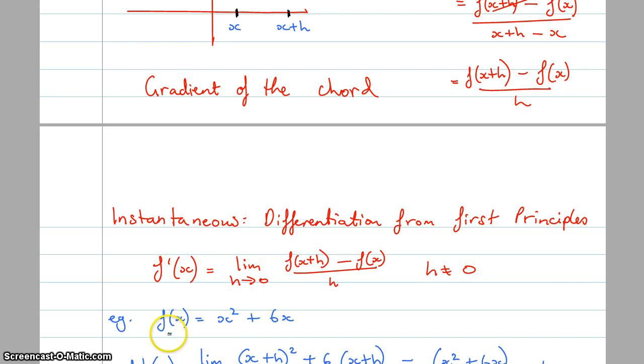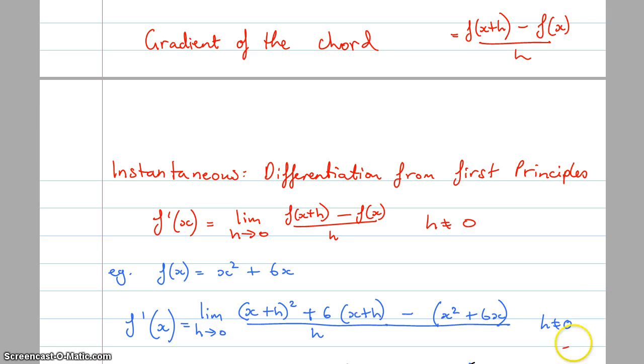So we get this function f of x equals x squared plus 6x. And what we're going to do is we're going to apply this formula to this graph here to find the derivative or to find the gradient of the tangent or the instantaneous rate of change. So I've still got this limit h approaches 0 at the front and I've still got this h equals 0 at the back. Those two things are really important for this and you actually need to have them right until the end. And then what I'm going to do is I'm just going to substitute x plus h into this equation here. So I get x plus h squared plus 6 times x plus h, that's from there, minus f of x which is just x squared plus 6x all over h.